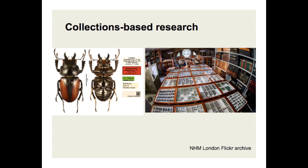Often in biology, all you can find is a single member of a species, or just a few representatives of that species. For that species to become something that has genuine value in biology, you have to describe it, name it, put a holotype label on it, store it in the museum, and make that information available to other people, usually in the form of a publication.